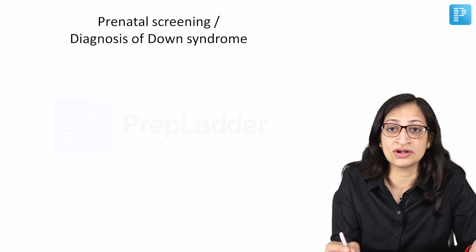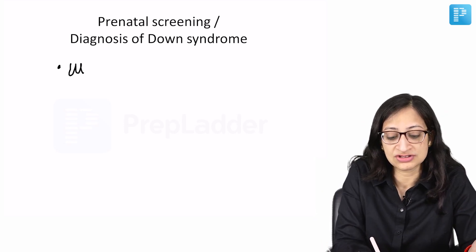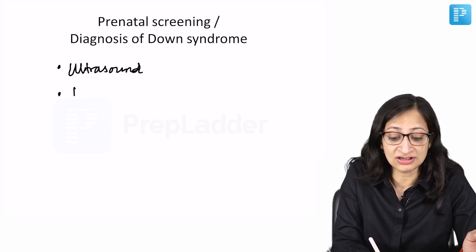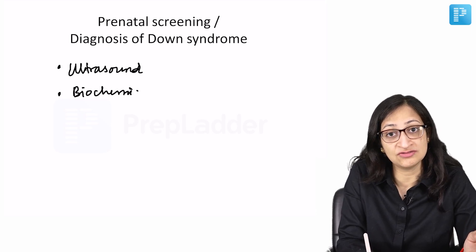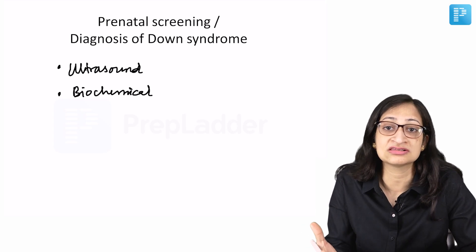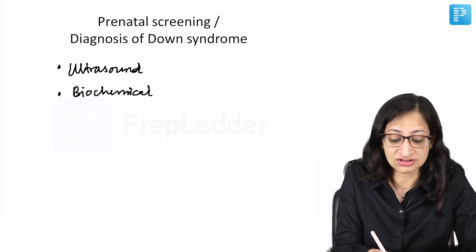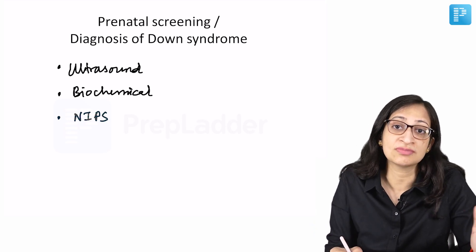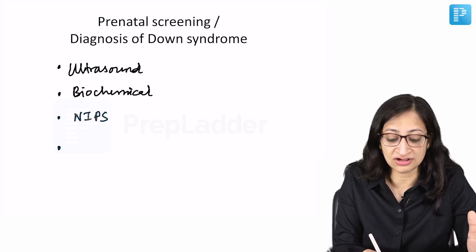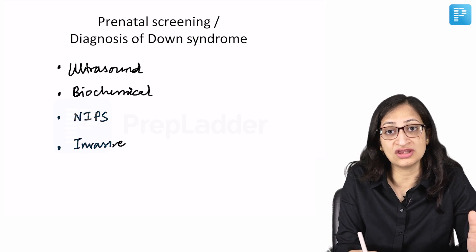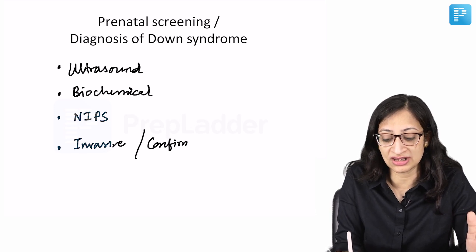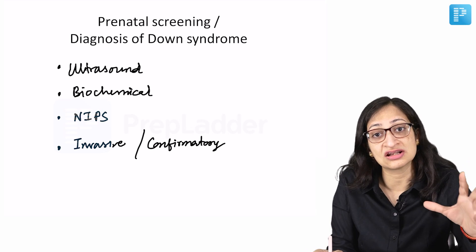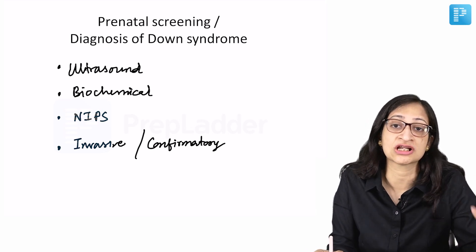There are some methods for prenatal screening. One is antenatal ultrasound, which can give some markers that are suggestive. Mother's blood can also be taken and some biochemical tests can be run to assess whether the couple has an increased risk of having a child with Down syndrome. There is also non-invasive prenatal screening using maternal blood. Finally, the confirmatory test is by invasive investigation, where a fetal sample is taken and subjected to karyotype.